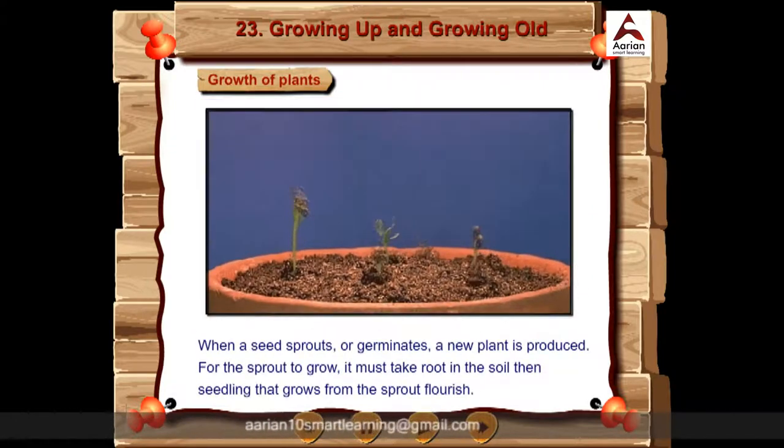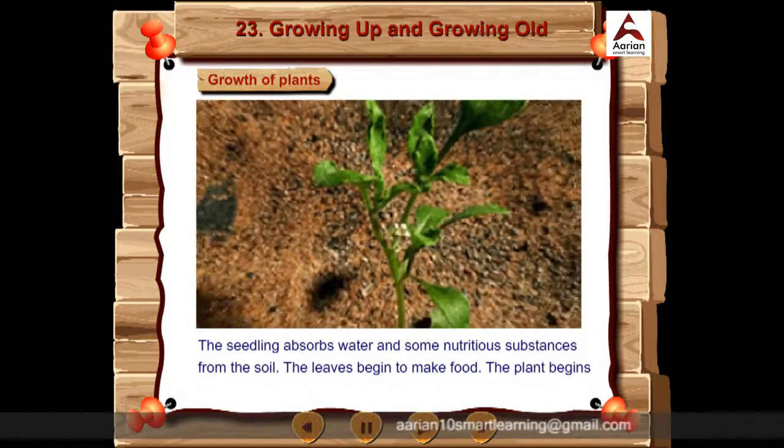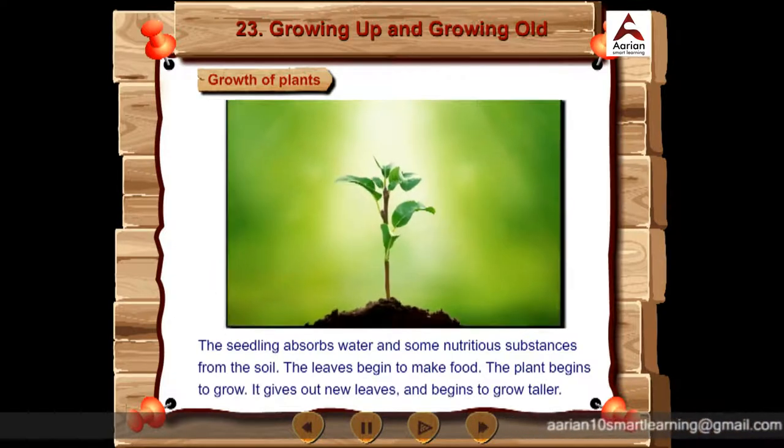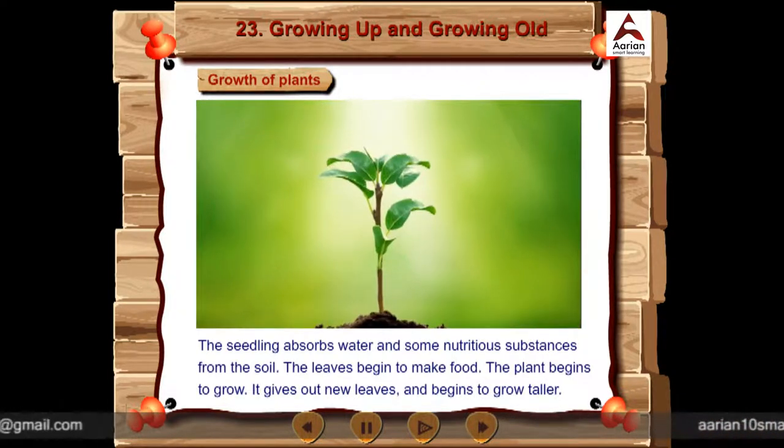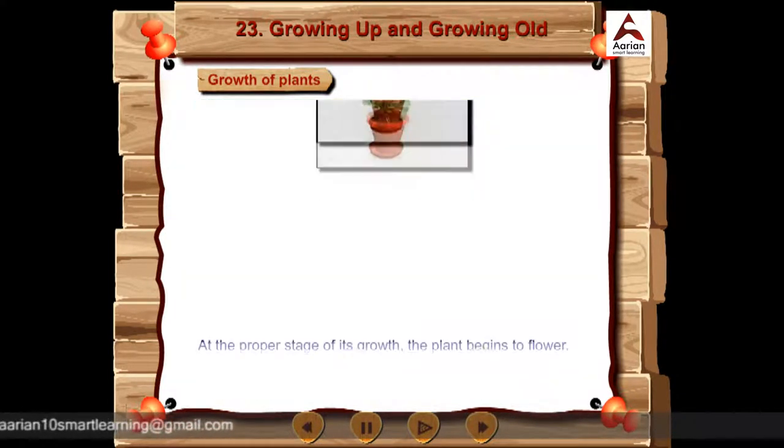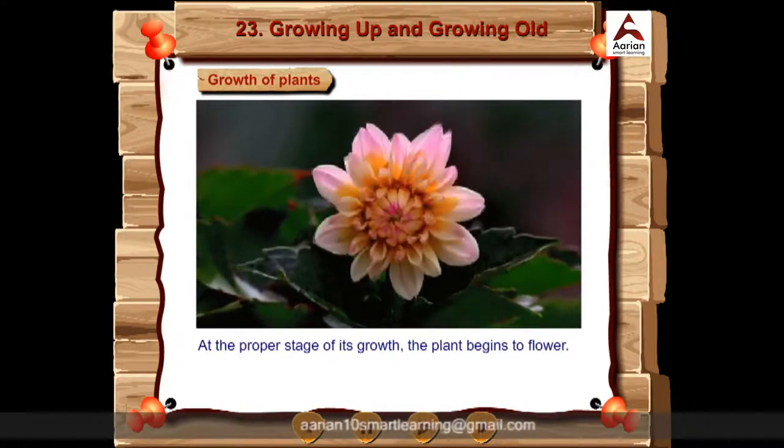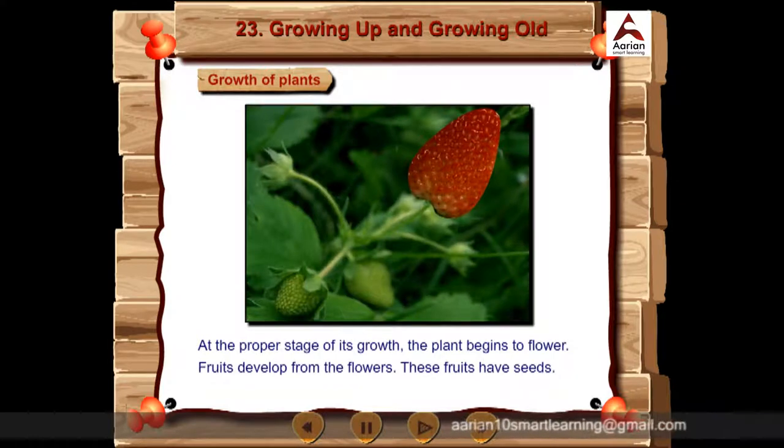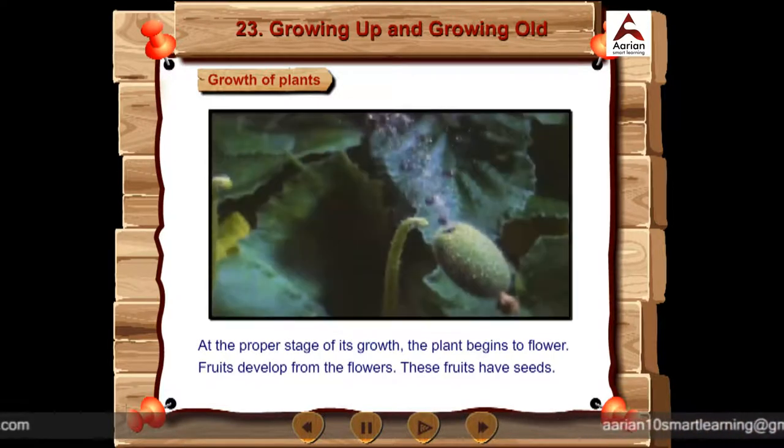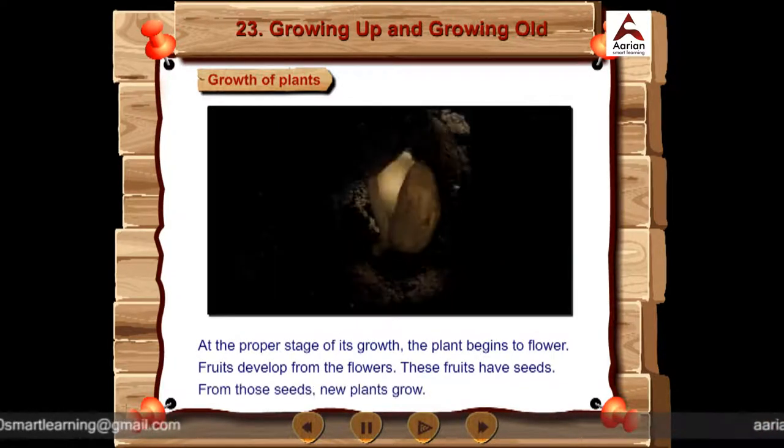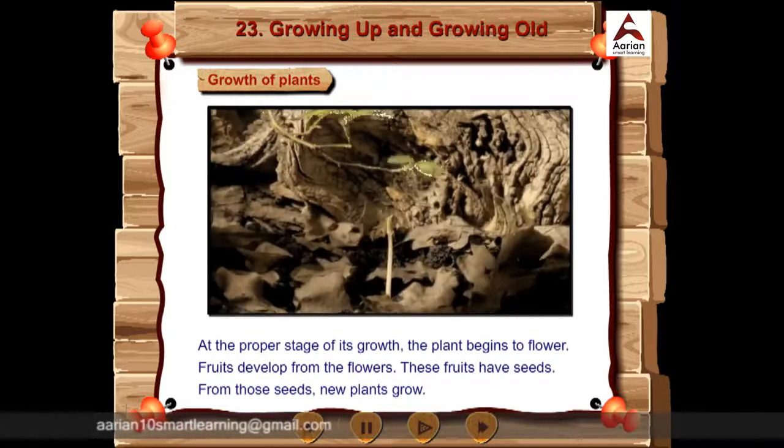Seedling that grows from the sprout flourish. The plant begins to grow. It gives out new leaves and begins to grow taller. At the proper stage of its growth, the plant begins to flower. Fruits develop from the flowers. These fruits have seeds. From those seeds, new plants grow.